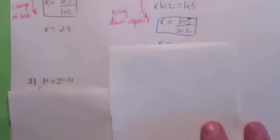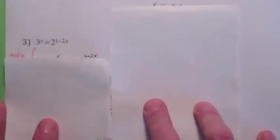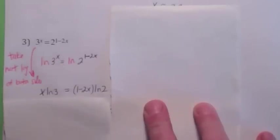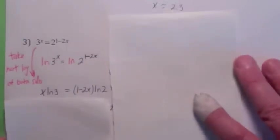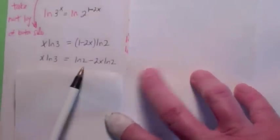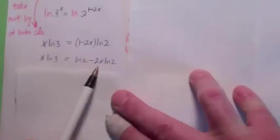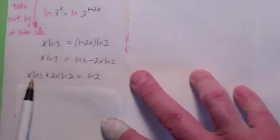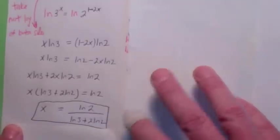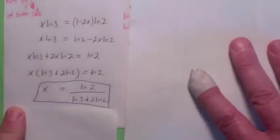This method also helps with problems where the first method doesn't work. If you have an exponential equation with x in both exponents, take the natural log of both sides — natural log of the left equals natural log of the right. Bring the exponents down on both sides. It becomes a messy algebra problem: use the distributive law on the right side, collect all terms with x, add 2x·ln(2) to both sides, factor out x from the left side, and divide. So x equals ln(2) over (ln(3) plus 2·ln(2)).